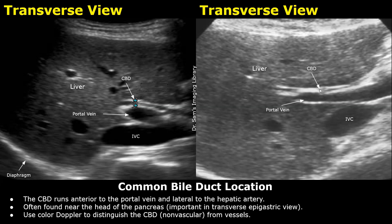This is the porta hepatis. The ultrasound probe is in a transverse orientation, focusing on the porta hepatis. When you see the main portal vein here, you will often see a thin tubular anechoic structure with hyperechoic walls, anterior to it. This is the common bile duct.